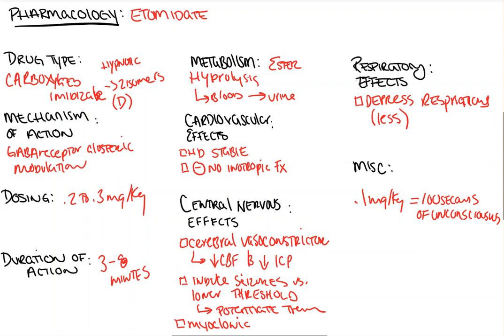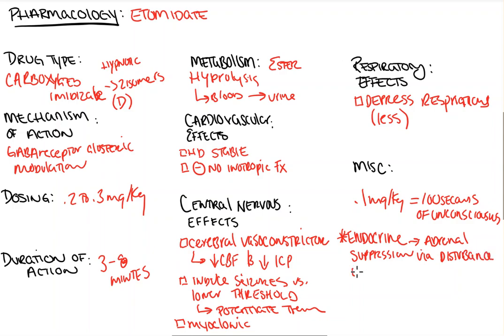Now for miscellaneous — and this is a starred, high-importance point — the endocrine system. This is going to be another big point that will come up on exams and discussions with attendings and colleagues. Etomidate can lead to adrenal suppression via disturbance of the enzyme 11-beta-hydroxylase, which is important in producing cortisol — one of our stress hormones — from steroids. That suppression may last up to eight hours after giving the drug, per Miller's.